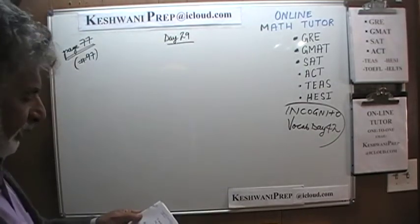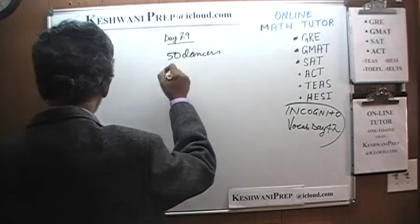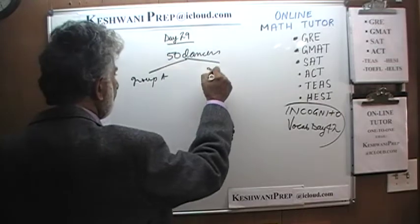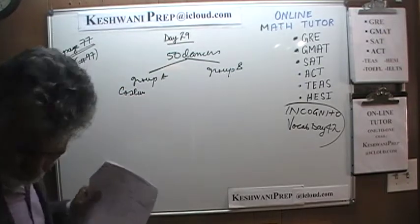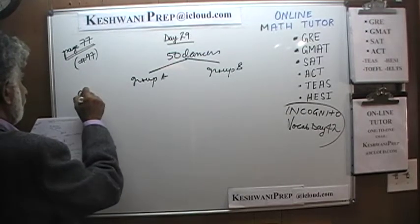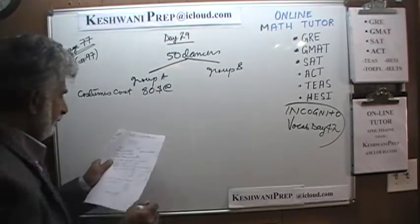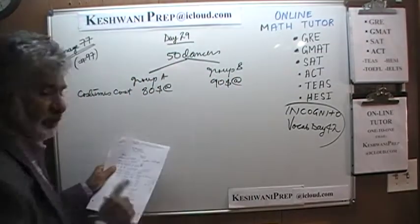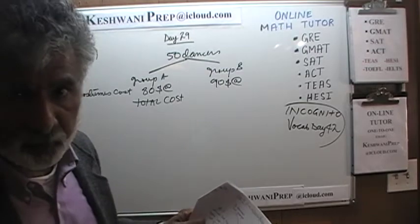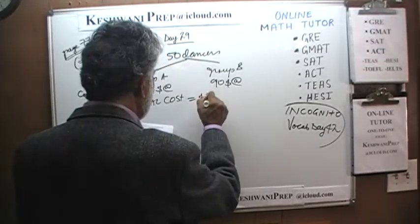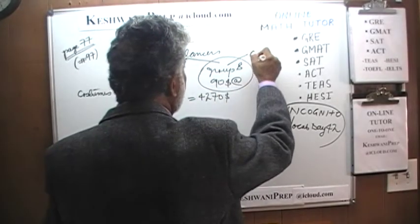Let's take a look at number 97. It says that we have 50 dancers split up into two groups, group A and group B. Costumes cost 80 dollars each for group A and 90 dollars each for group B. We are further told that the total cost of the costumes for all 50 people is 4,270 dollars. The question simply is: what's the cost of the costume for group B?